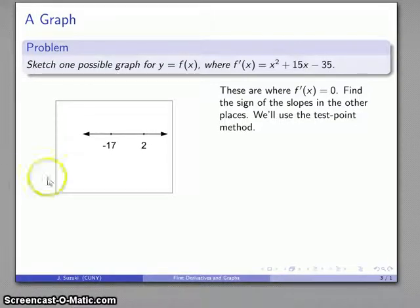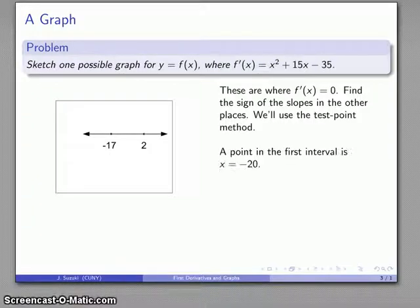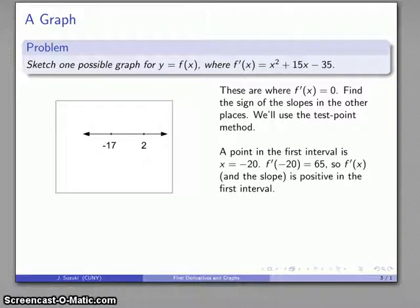So we'll use a test point method and we'll note that our two points have divided our number line into 1, 2, 3 distinct regions. Within each region the sign is going to be the same. We can try a test point at that first interval someplace over here. -20 works, -100 works, -a billion works if you can reason your way through what the sign of that's going to be. If x = -20, substituting that into our derivative equation we find slope is equal to 65. So the derivative and the slope is positive in that first interval.